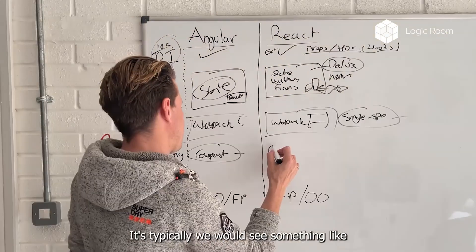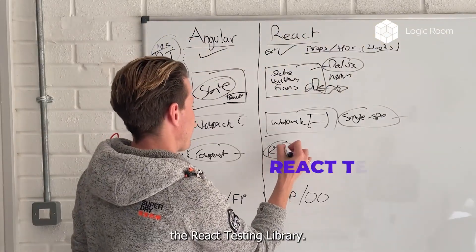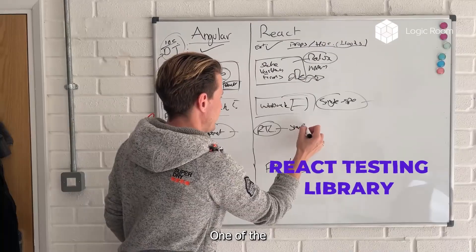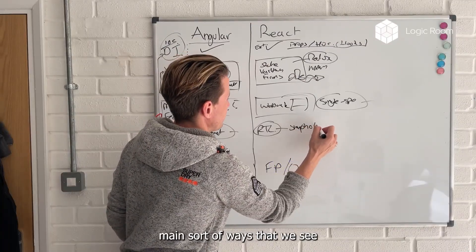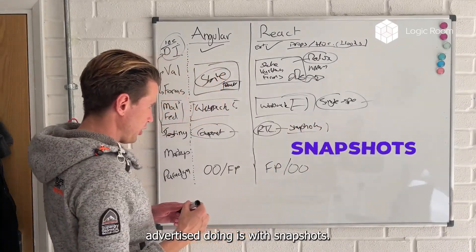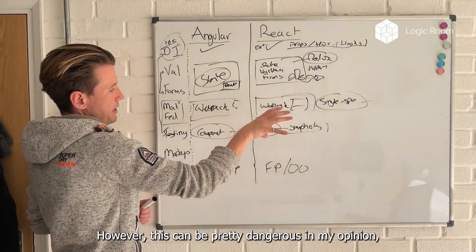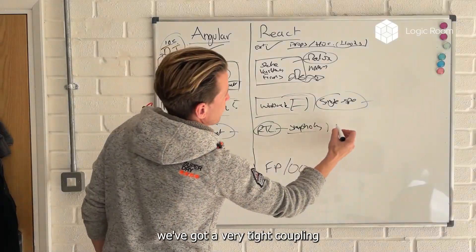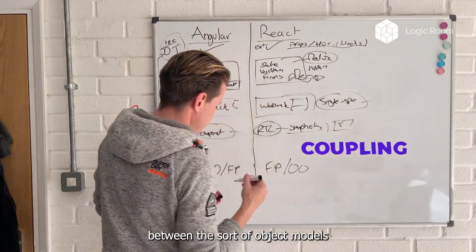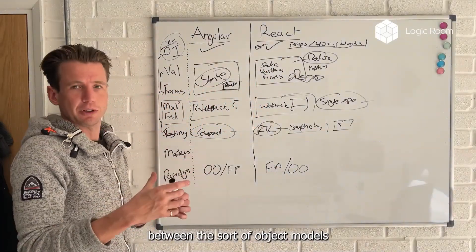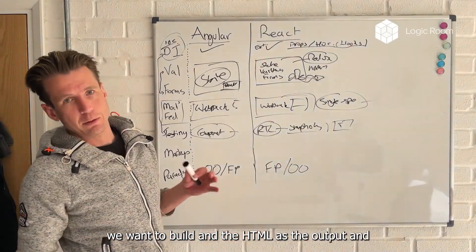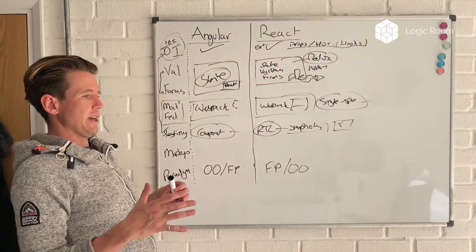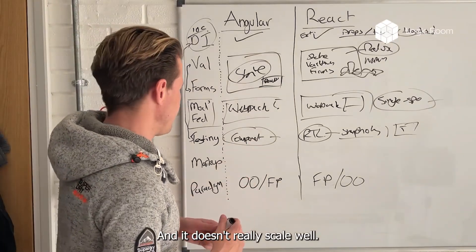In React, typically we would see something like the React testing library. One of the main ways that we see advertised is doing it with snapshots. However, this can be pretty dangerous, in my opinion, of doing snapshots. Because what we get is we get a very tight coupling between the object models we want to build and the HTML that's output. And that can make our testing very brittle in the end. And it doesn't really scale well.